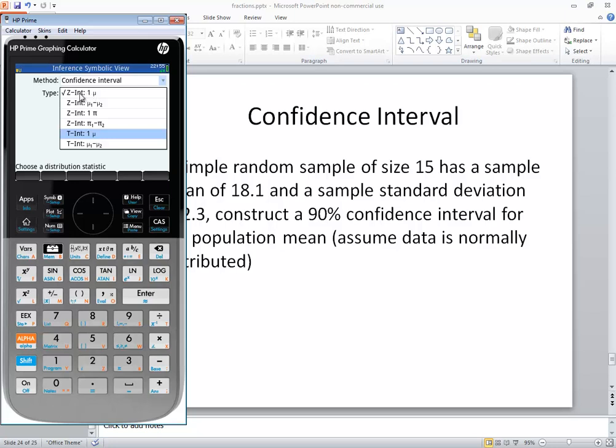Now zint is when sigma is known, when population standard deviation is known. tint is when sigma is not known, when you don't know the population standard deviation. So I want tint. So I press enter on that.